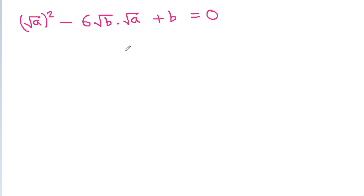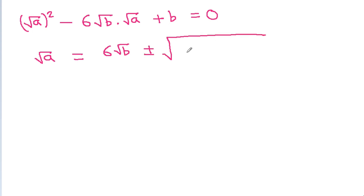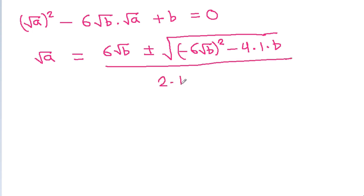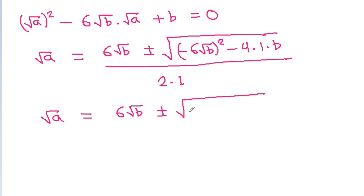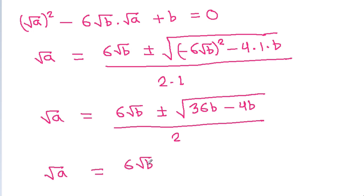Since it is a quadratic equation in root a, we apply the quadratic formula: root a equals 6 root b plus or minus the square root of (6 root b) squared minus 4 times 1 times b, all over 2. This simplifies to root a equals 6 root b plus or minus the square root of 36b minus 4b over 2, giving root a equals 6 root b plus or minus the square root of 32b over 2.